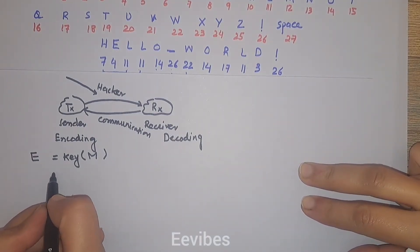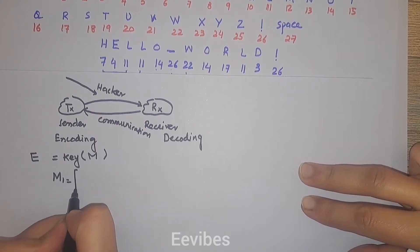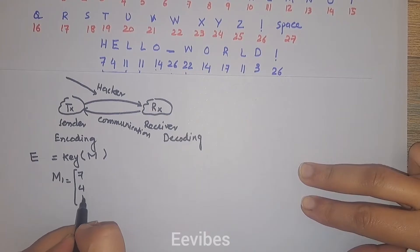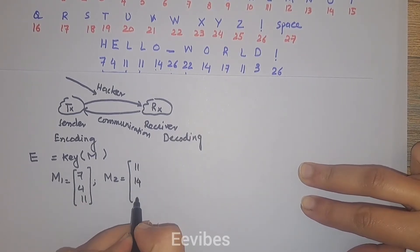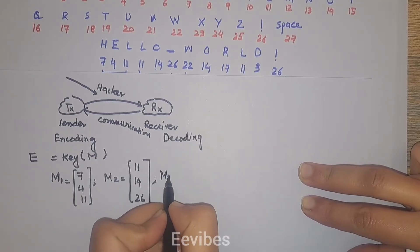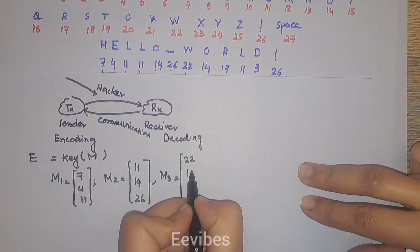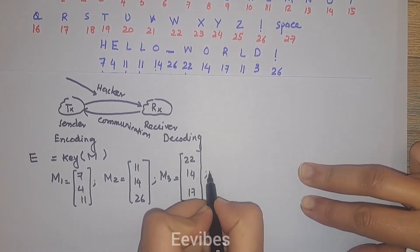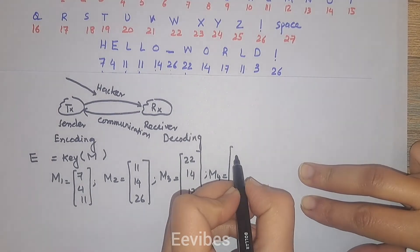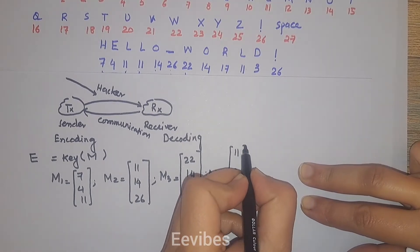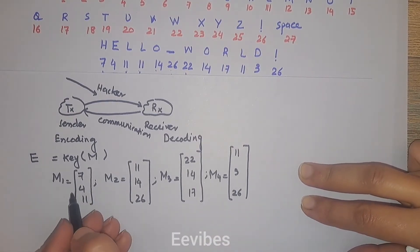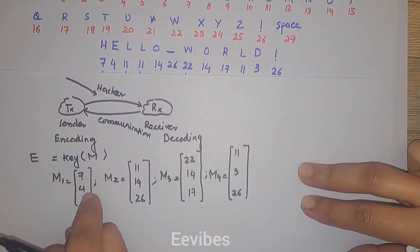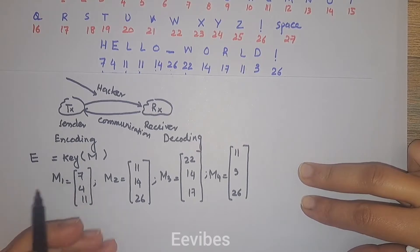Once we assign code numbers to the original message, the next step is to write them in the form of vectors. Message m1 = [7, 4, 11], message m2 = [11, 14, 26], message m3 = [22, 14, 17], and message m4 = [11, 3, 26]. Since there were 12 characters total, we could make vectors of 2 numbers, but that would increase calculations. The vector size depends on the order of the key provided.